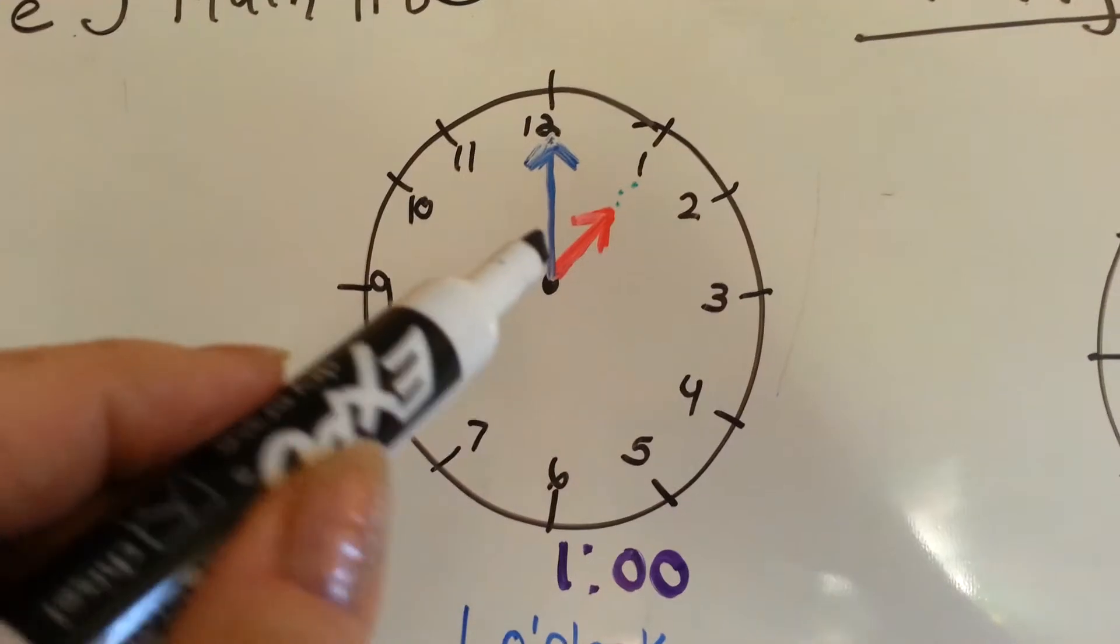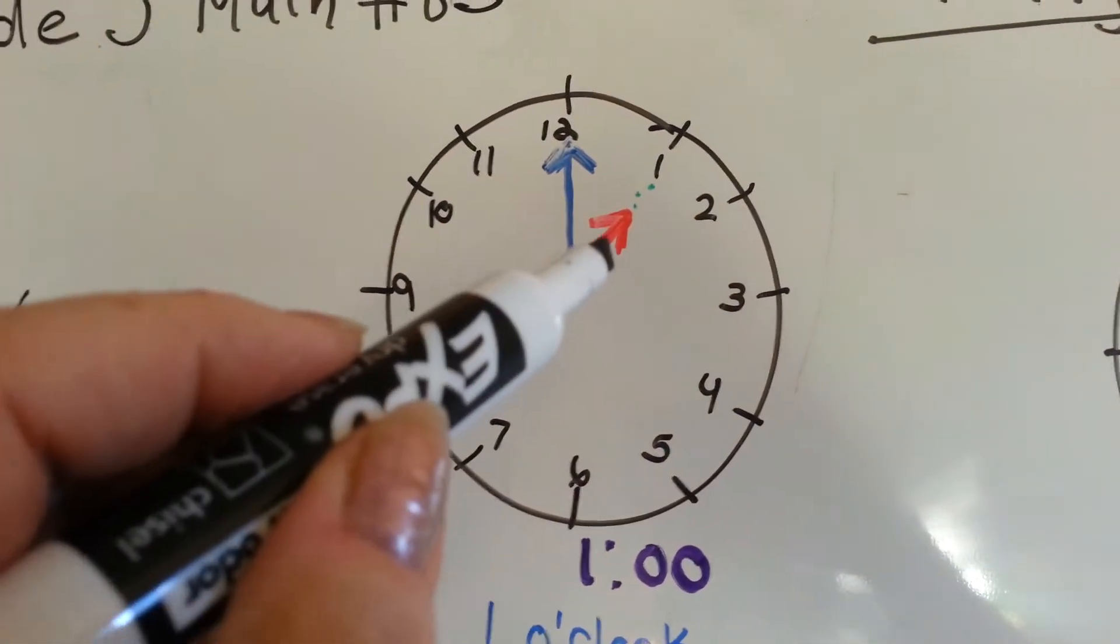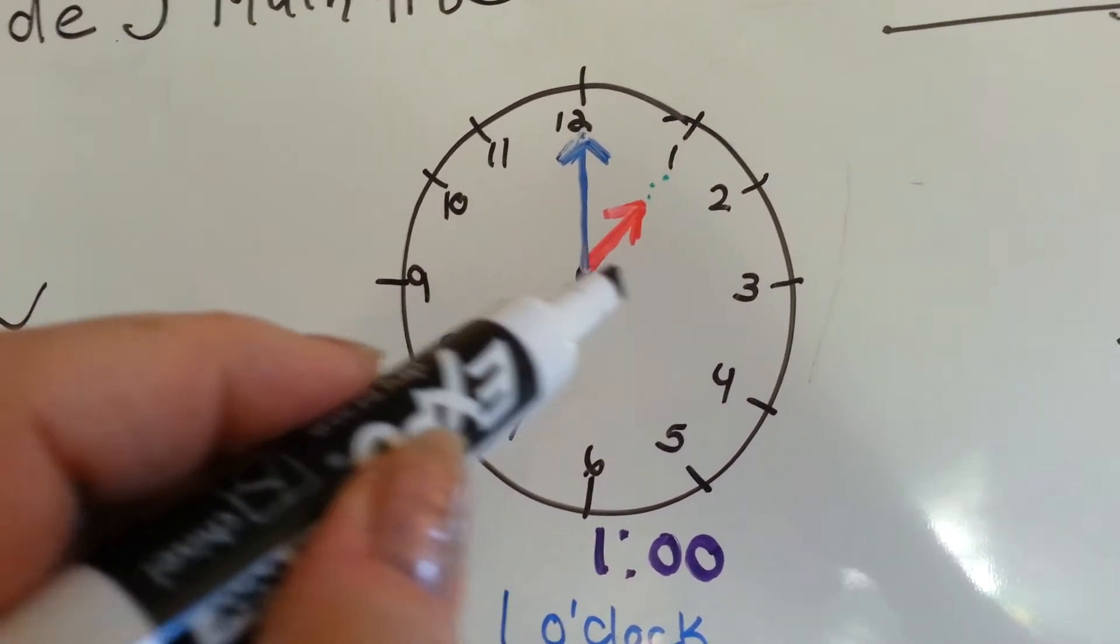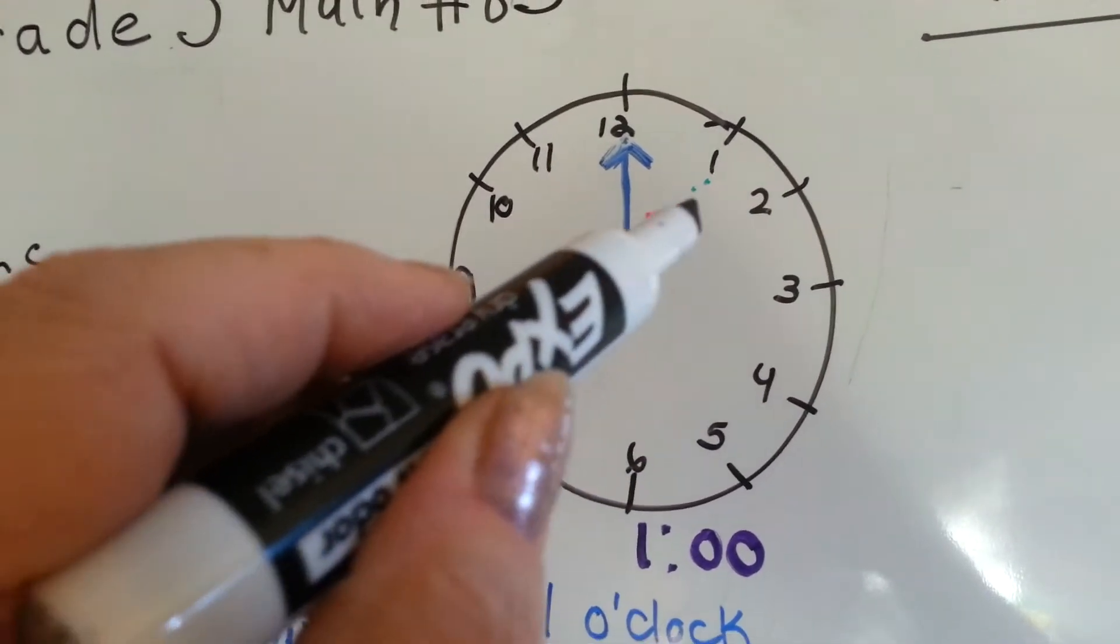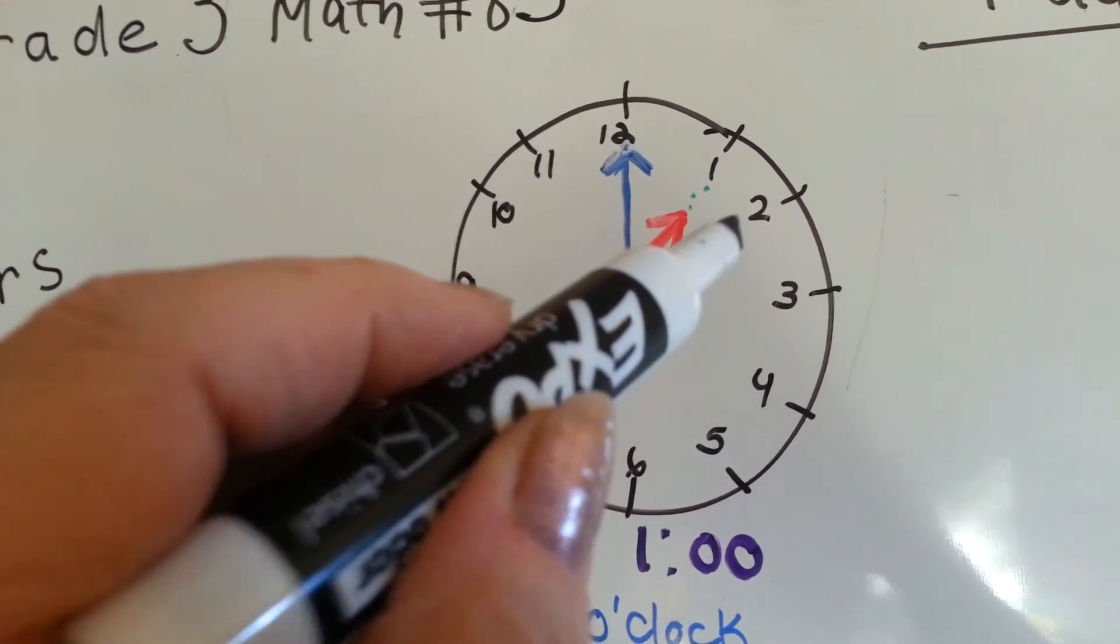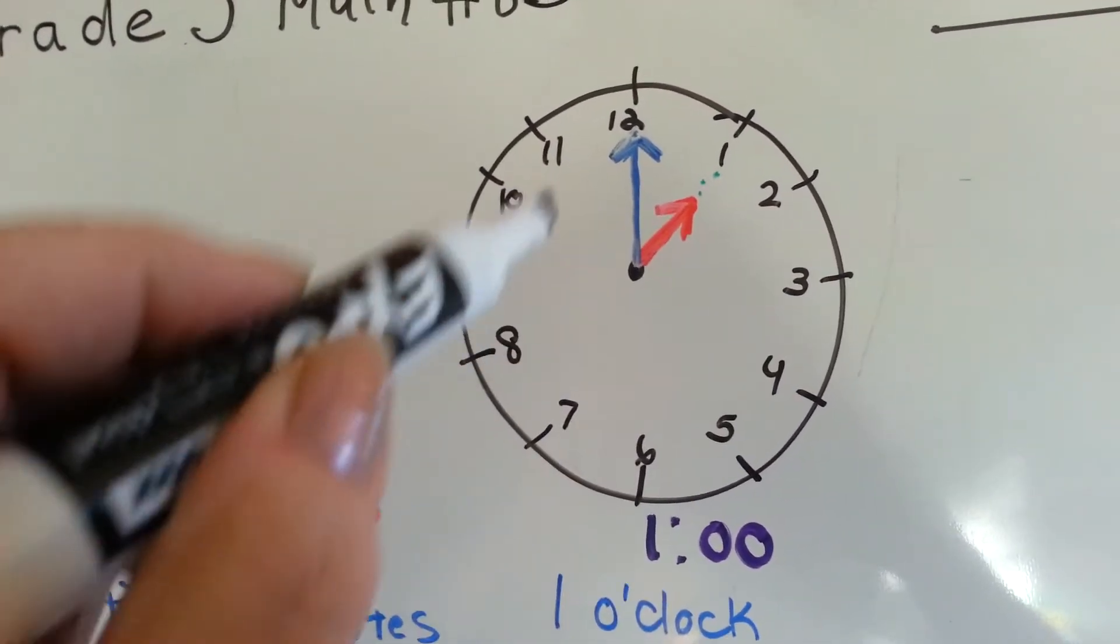So look at this clock. For the next hour, this red hand is going to go to the 2, then the 3, then the 4, then the 5, then the 6. Each time the red hand moves to another number, the blue hand goes all the way around.